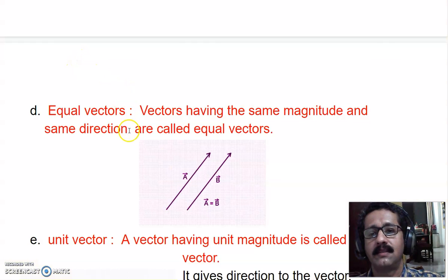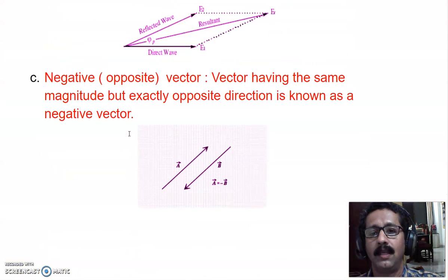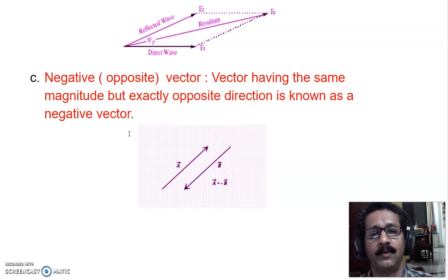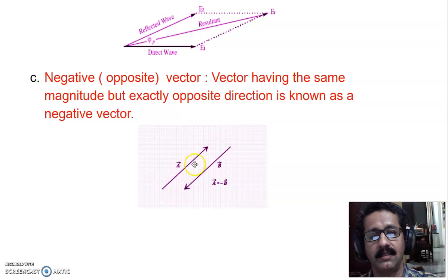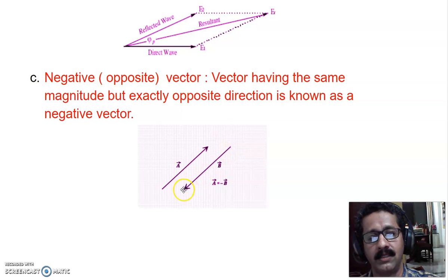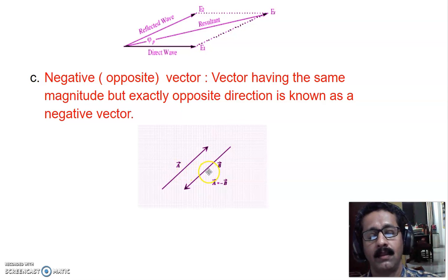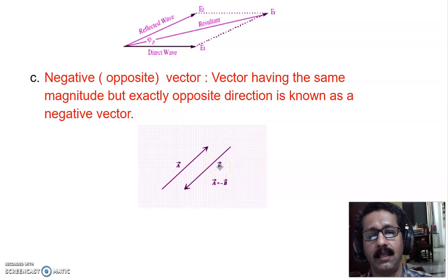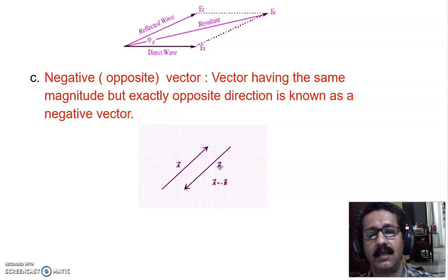Negative or opposite vectors are vectors having the same magnitude but pointing in exactly the opposite direction — 180 degrees opposite. In this diagram, vector A points in one direction and vector B is equal in magnitude but 180 degrees opposite. So vector A equals minus vector B. The negative sign represents that A and B are equal in magnitude but opposite in direction.